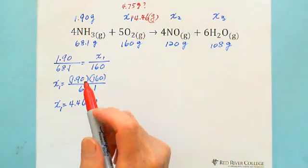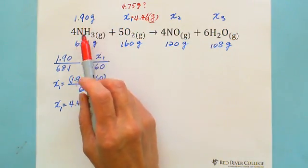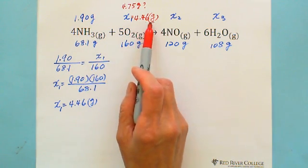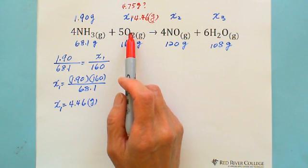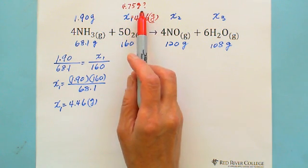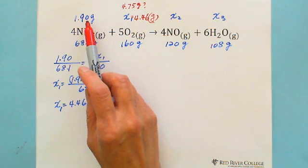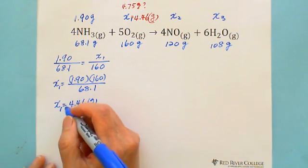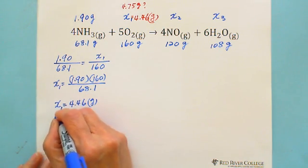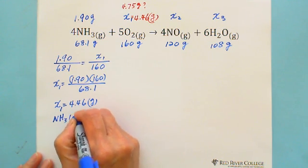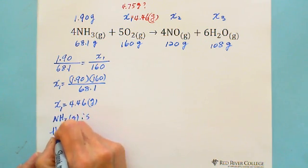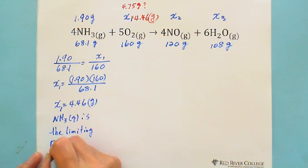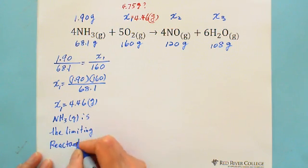That means if 1.90 grams of ammonia all reacted, we would only need 4.46 grams of oxygen. Since we have 4.75 grams of oxygen, obviously oxygen is in excess. So NH3 — ammonia gas — is the limiting reactant.